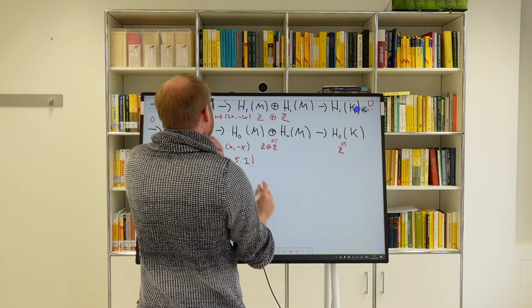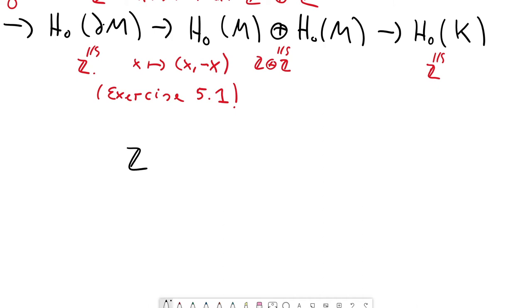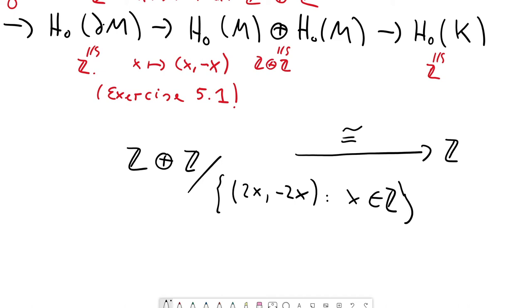Z⊕Z modulo the image of this map would be all elements of the form (2x,-2x) where x∈Z. So this is the group we have to compute now. We already know what it should be, so let's prove that this is actually true. Let us find an isomorphism of groups to Z⊕Z/2. This is the claim that this should be an isomorphism.